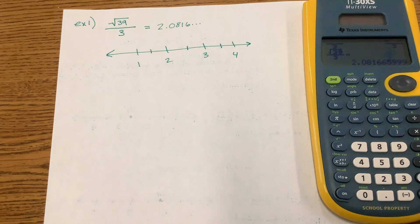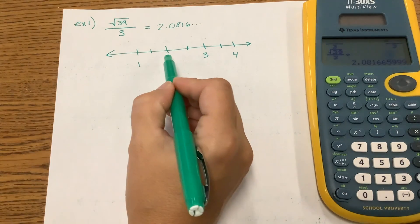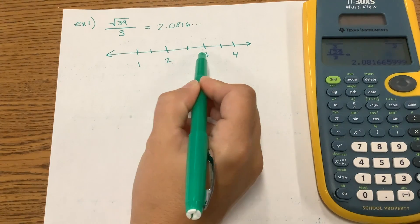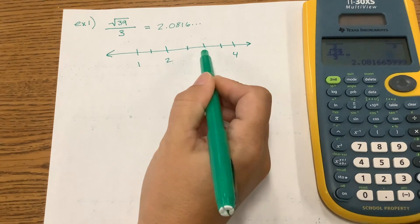We're going to go ahead and place this on a number line. What values is 2.0816 in between? So it's in between the 2 and the 3, right? It's going to be somewhere in here.